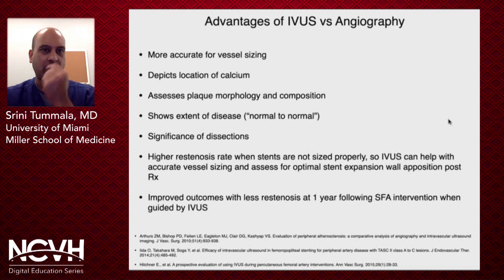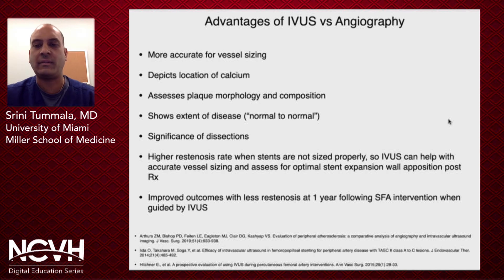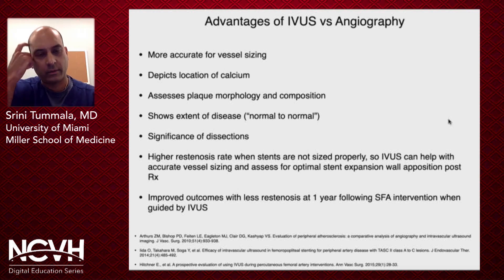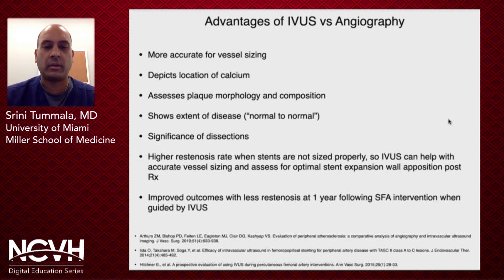IVUS does have many advantages compared to angiography. It's more accurate for vessel sizing and determining the true size of an artery being treated. It depicts the location of calcium and assesses plaque morphology and composition much better than angiography. It also shows you the extent of disease because we want to treat normal to normal to improve patency rates. The significance of dissections is definitely much better shown with IVUS. There's data now showing improved outcomes with less restenosis at one year following SFA interventions guided by IVUS, including stent placement as well as atherectomy.